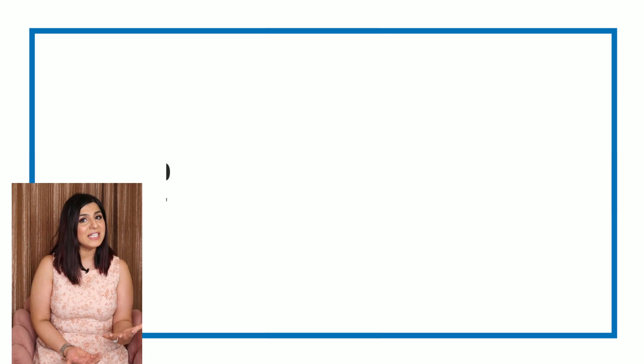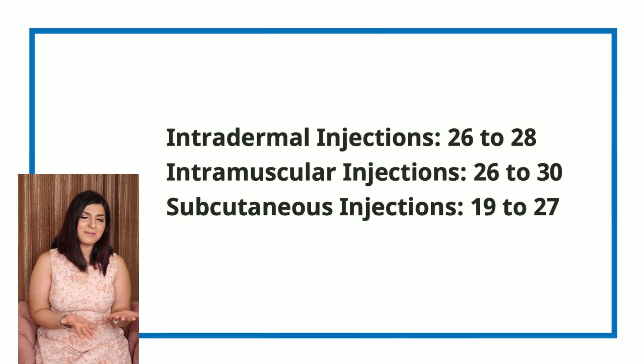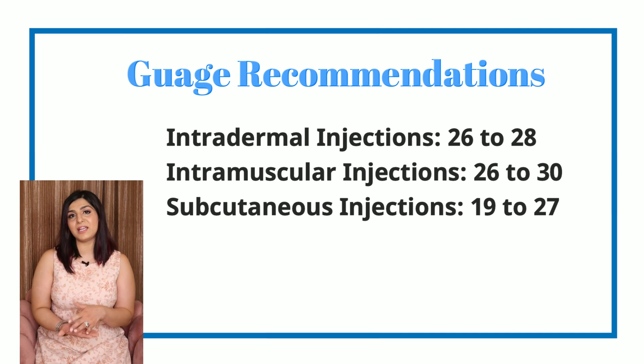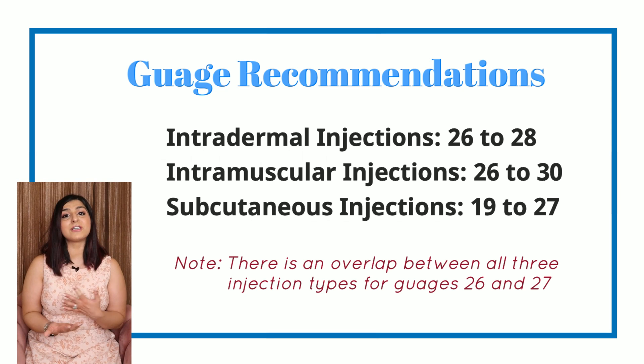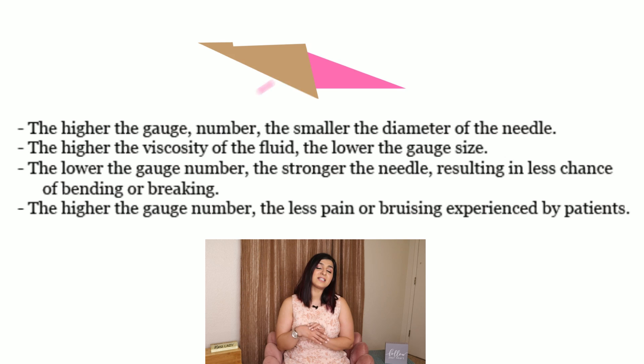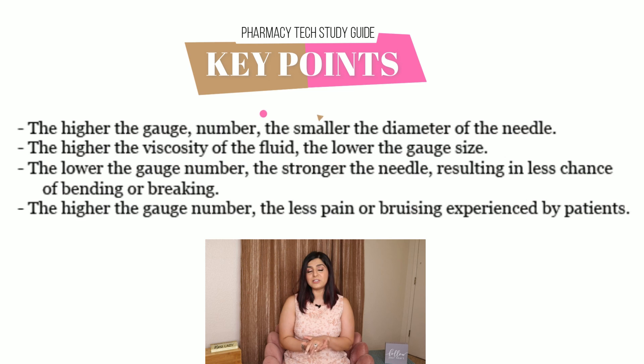Needle gauge is what confuses most people, so here on the screen is a summary of gauge ranges for different injection types. For intradermal injections, the best gauge range is 26 to 28. For intramuscular injections, 26 to 30 is a good range. For subcutaneous injections, stay in the gauge range of 19 to 27. If you're working in a pharmacy with a limited choice of gauges, staying in the 26 to 27 range is safe because that provides an overlap between all three injection types. There's also a key points slide on screen — take a screenshot so you'll never be intimidated when selecting the right needle size for your patient.